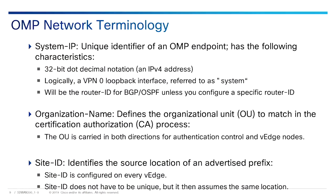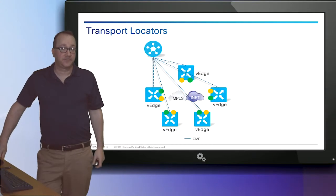The organization name is case-sensitive and must be identical on every device in your network. It must match the name in the certificates, and if it doesn't, the device will not come up. The site ID is a numeric identifier for the site in the Cisco overlay network and must be the same for all Cisco SD-WAN devices that reside at the same site — for example, in a VRRP environment where multiple devices connect at the same location.